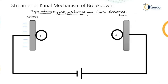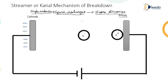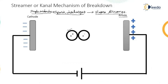That single avalanche then forms the plasma streamer. This particular figure shows a single electron starting at the cathode by ionization. We already know what ionization is — that builds up an avalanche that crosses the gap. Electrons in the avalanche move very fast compared with the positive ions.